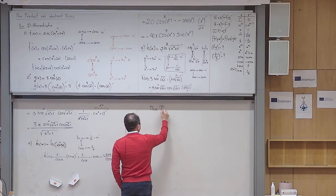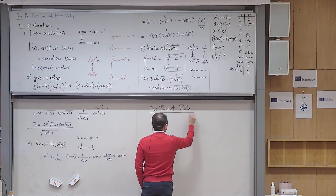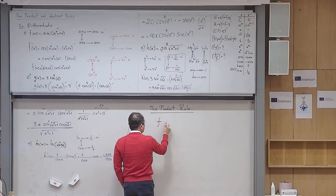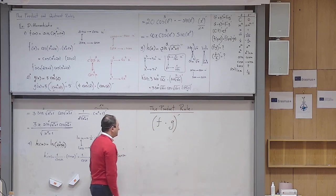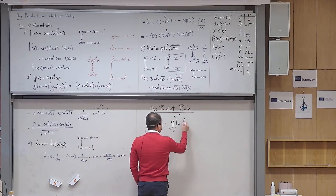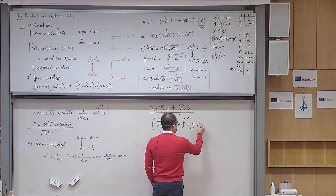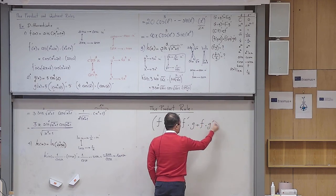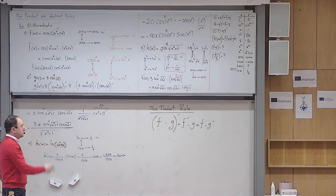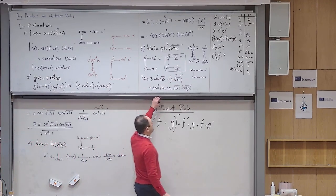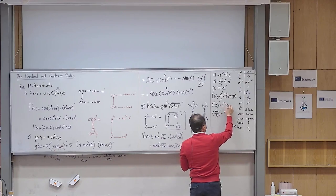The product rule: if you have a function f multiplied by another function g and you want to differentiate, it becomes the derivative of the first one multiplied by the second one itself, plus the first one itself multiplied by the derivative of the second. So (fg)' = f'g + fg'. You will have it in the formula sheet.